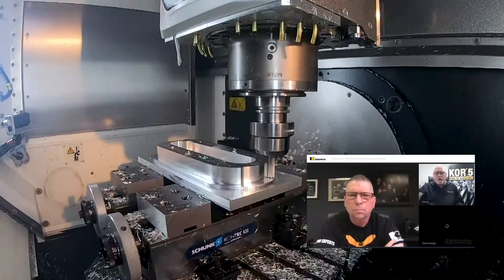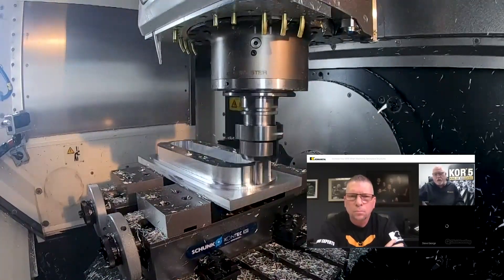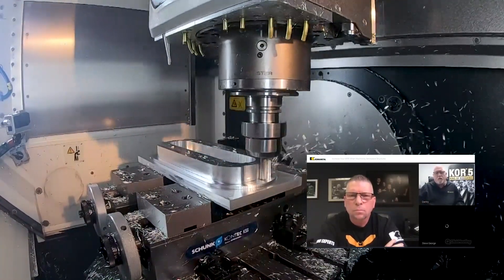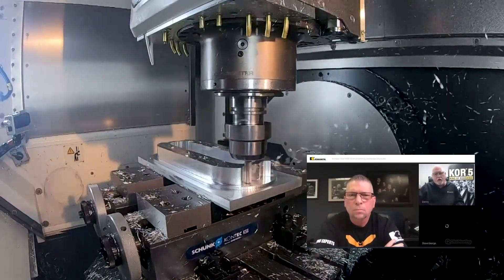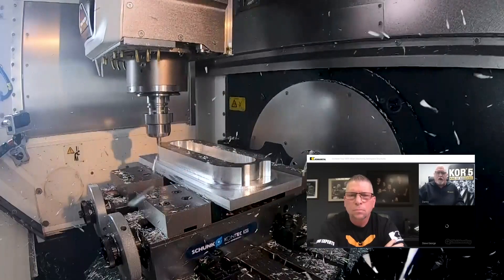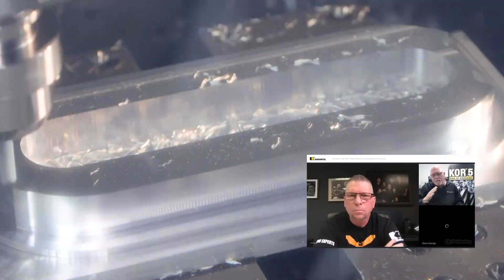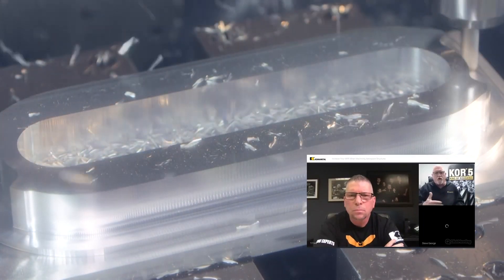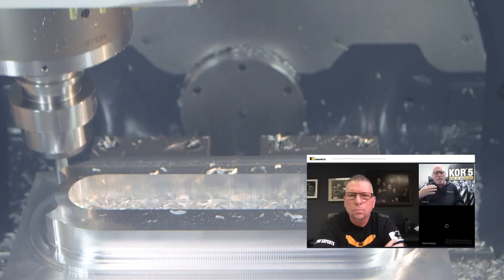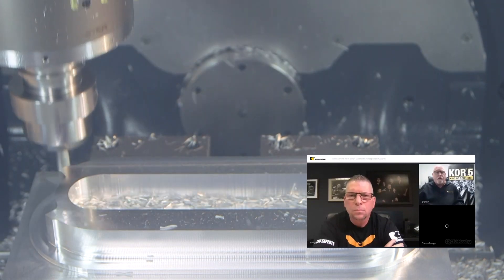We were trying to see how fast we could go. Then we backed off the RPMs, adjusted our radial stepover and axial depth, and maxed out the machine. Got in that sweet spot of the torque curve. Just like you said, you got to know your machine. That way we got a lot more cubic inches of material out.